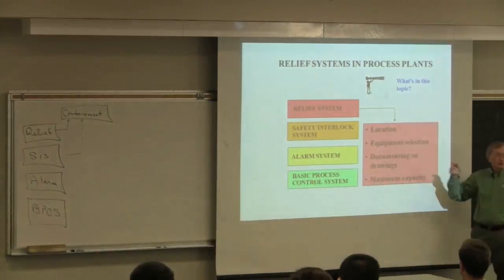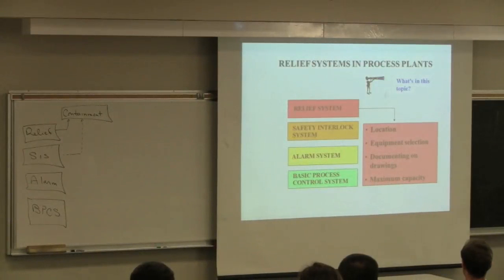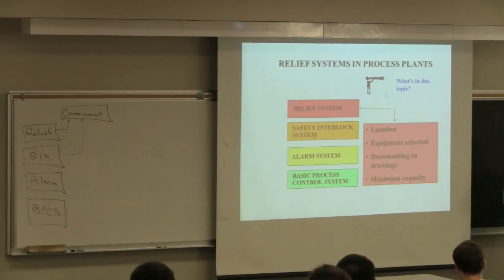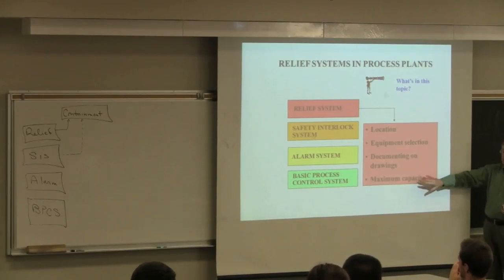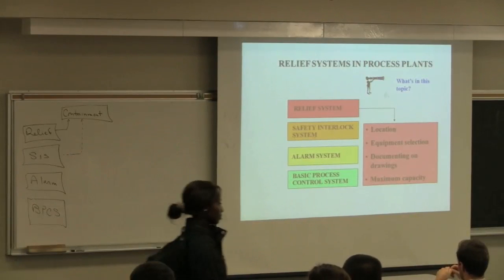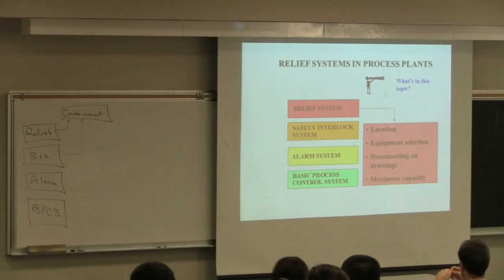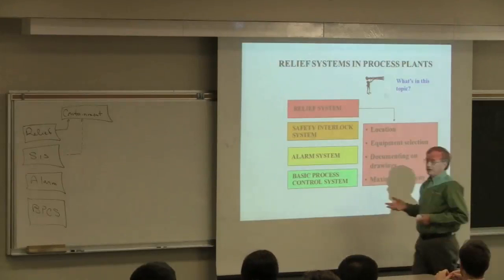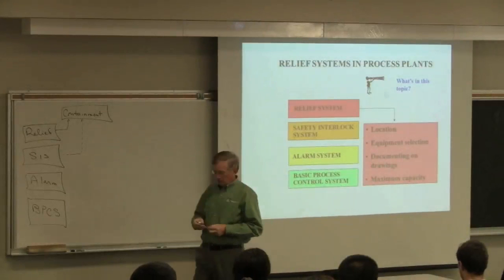We're going to talk about where we locate relief systems in the process, what kind of equipment is available—we introduced that last class—a little bit on how you decide between different kinds of equipment, how you document the drawings, and how you figure out the maximum capacity: the maximum flow rate you'll have to process. I'll show a few equations but won't go through the details of the calculations, which you can find in many books.